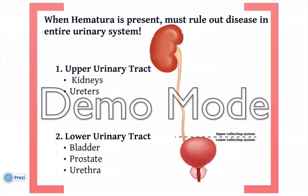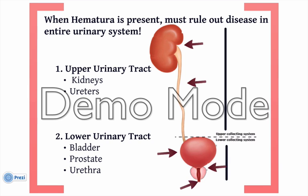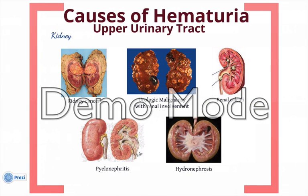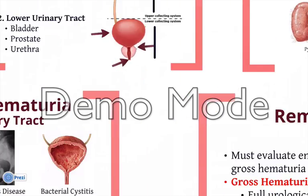The easiest way to think of hematuria and its evaluation is to think of the urinary system as two parts. Part one would be the upper urinary tract, consisting of the kidneys and ureters. The lower urinary tract would consist of the bladder, prostate, and urethra. The causes of upper tract hematuria include kidney cancer or any significant urologic malignancy involving the kidney, history of urinary calculus disease, pyelonephritis, or concurrent hydronephrosis — all could be causes of hematuria originating from the upper tract.